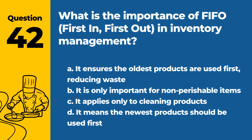Question 42. What is the importance of FIFO (First In, First Out) in inventory management? a. It ensures the oldest products are used first, reducing waste. b. It is only important for non-perishable items. c. It applies only to cleaning products. d. It means the newest products should be used first. Answer: a. It ensures the oldest products are used first, reducing waste. FIFO is a key principle in inventory management to ensure food safety and minimize waste.